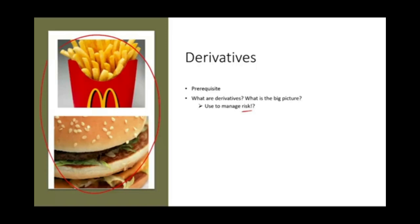Let's think about the word derivatives first. What is derivatives? Derivatives means it derives from something else — it derives its value from something else. So something derives its value from something else, and it's used to manage risk. How does it work? Let's work the example of McDonald's and french fries.